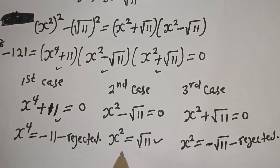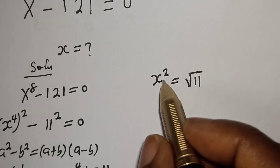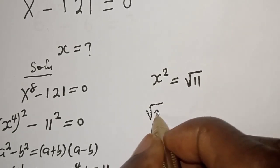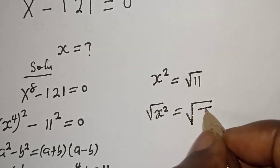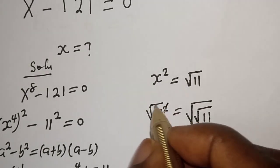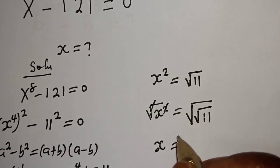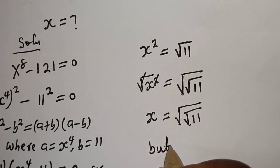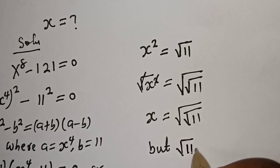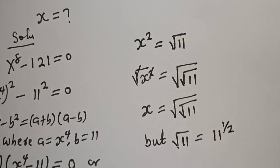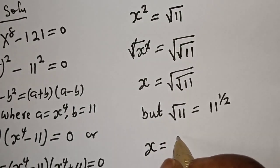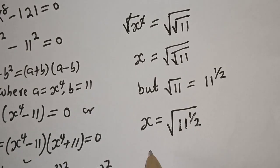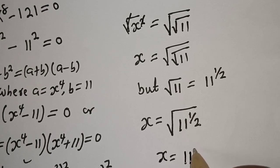The only real solution we have is s squared equals root 11. Let's take the square root of both sides: square root of s squared equals square root of root 11. This simplifies so that s equals the square root of the square root of 11. Now, square root of 11 is equal to 11 raised to power 1 over 2, and s is equal to the square root of 11 raised to power 1 over 2.